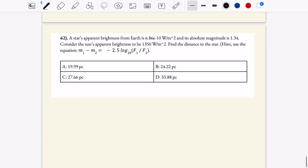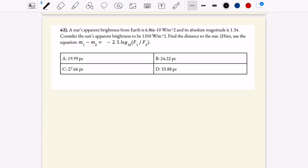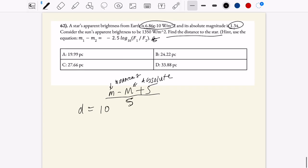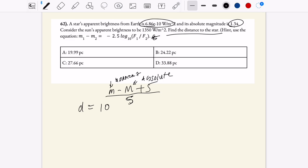Next question. A star's apparent brightness is this much, absolute magnitude that much, and we want to find the distance to the star. Quickly, distance to a star is 10 to the apparent magnitude minus m, your absolute magnitude, plus 5 divided by 5. That's just rearranging the distance modulus. This is the equation that I like to memorize. So we have the absolute magnitude to get distance, but we need the apparent magnitude.